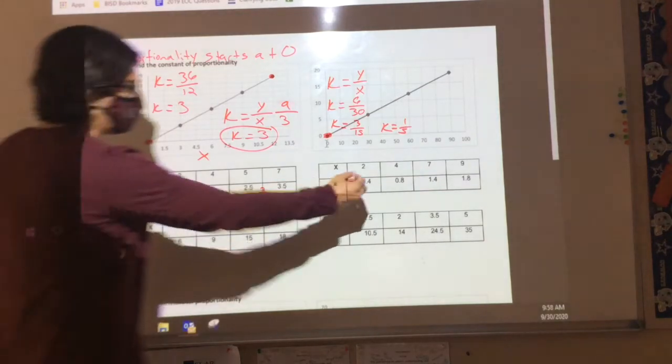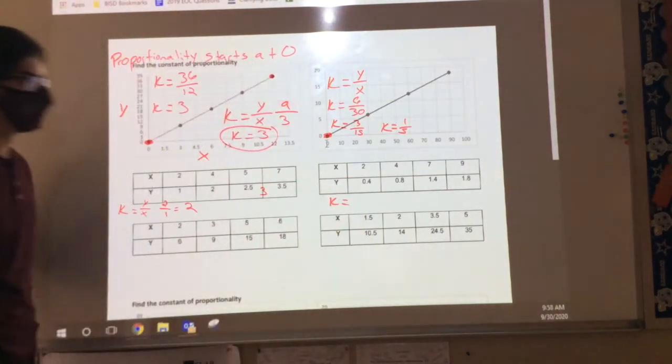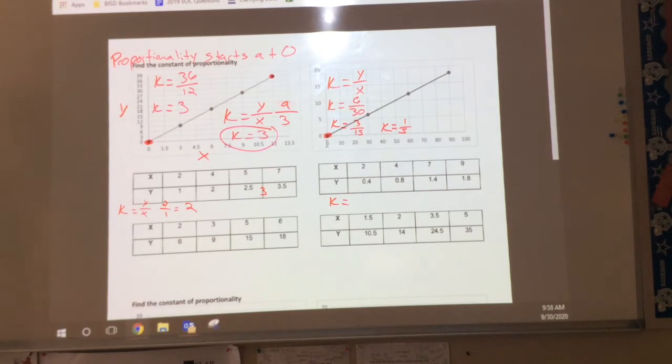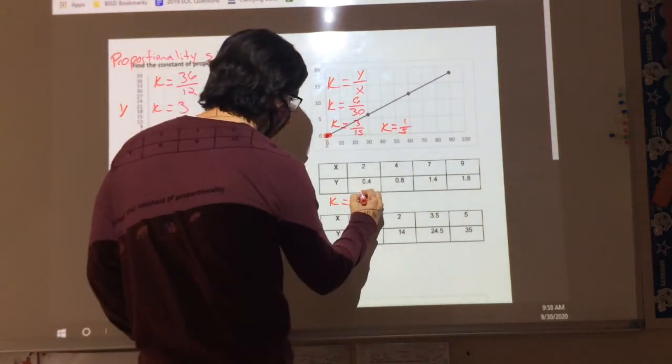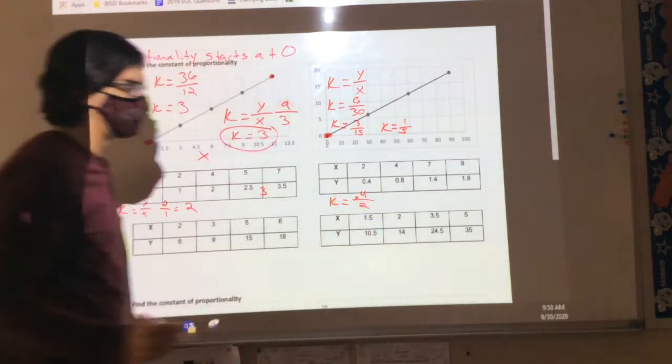Can you tell me what the constant is for this table over here? No, this is all 7th grade material. Well, let me ask you this. How would I set that one up? Or 0.4 over 2. 0.4 over 2. What does that really want you to do?